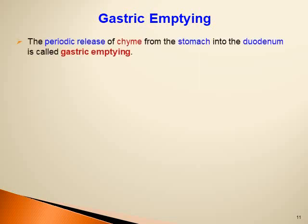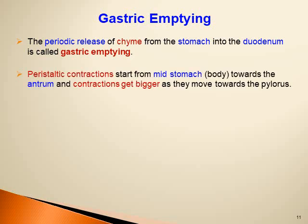Gastric emptying is the periodic release of chyme from the stomach into the duodenum. With each strong contraction, about 3 ml of chyme is emptied into the duodenum. Peristaltic contractions start from the mid-stomach toward the antrum, growing stronger toward the pylorus. Gastric emptying time is normally two to four hours, after which the stomach returns to its empty volume of 50 ml.